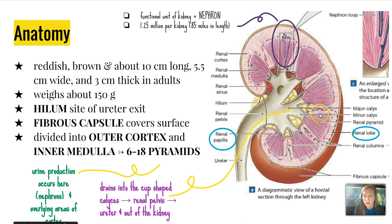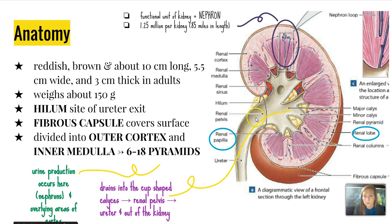Once urine is produced and filtered through, it drains into cup-shaped calyces. This is a minor calyx, and then the major calyx is the larger open area that drains into the renal pelvis, to the ureter, and out of the kidney.